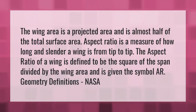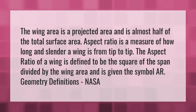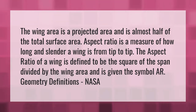The wing area is a projected area and is almost half of the total surface area. Aspect ratio is a measure of how long and slender a wing is from tip to tip. The aspect ratio of a wing is defined to be the square of the span divided by the wing area, and is given the symbol R.